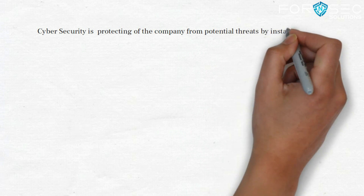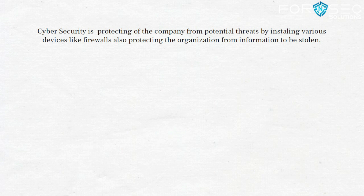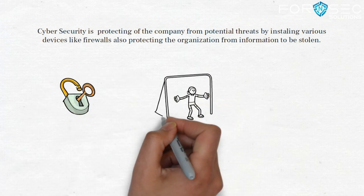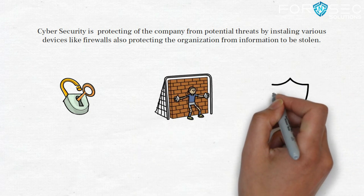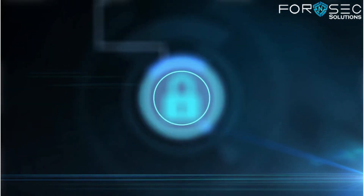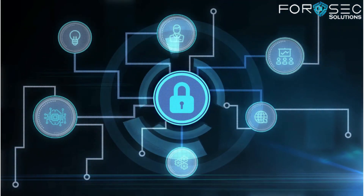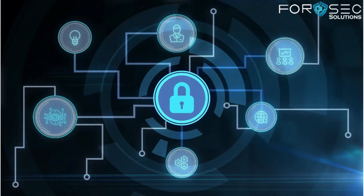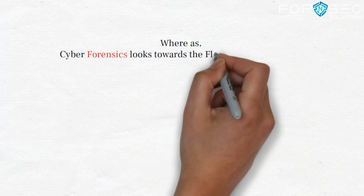Cyber security looks at protection of a company from potential threats by installing various devices like firewalls, and also protects the organization from having its information stolen while using monitoring systems. In cyber security, an organization or company is protected from external attacks — and as we can see, cyber attacks are constantly increasing, so every organization tries its level best to protect the company from external threats.